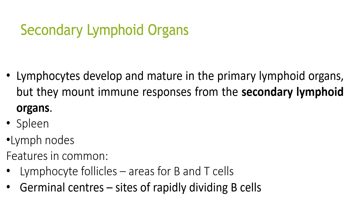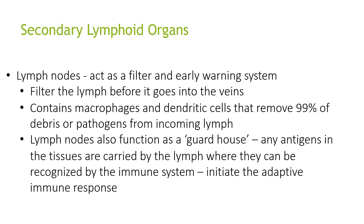Looking at secondary lymphoid organs, lymphocytes develop and mature in the primary lymphoid organs, but they must mount immune responses from the secondary lymphoid organs, such as the spleen and lymph nodes. These share features in common: lymphocyte follicles, which are areas for B and T cells, and germinal centers, which are sites of rapidly dividing B cells. The lymph nodes act as a filter and early warning system — they filter lymph before it goes into the veins. They contain macrophages and dendritic cells that remove 99% of debris or pathogens from incoming lymph. Lymph nodes also function as a guardhouse: any antigens in the tissues carried by the lymph can be recognized by the immune system and initiate an adaptive immune response.